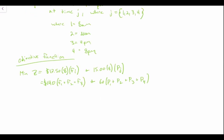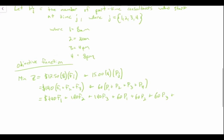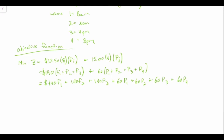We could expand this further to write it the long way: 140·F1 + 140·F2 + 140·F3 + 60·P1 + 60·P2 + 60·P3 + 60·P4. That's our objective function. It's probably nicer to leave it in the condensed form, but you're free to write it out the long way if you prefer.